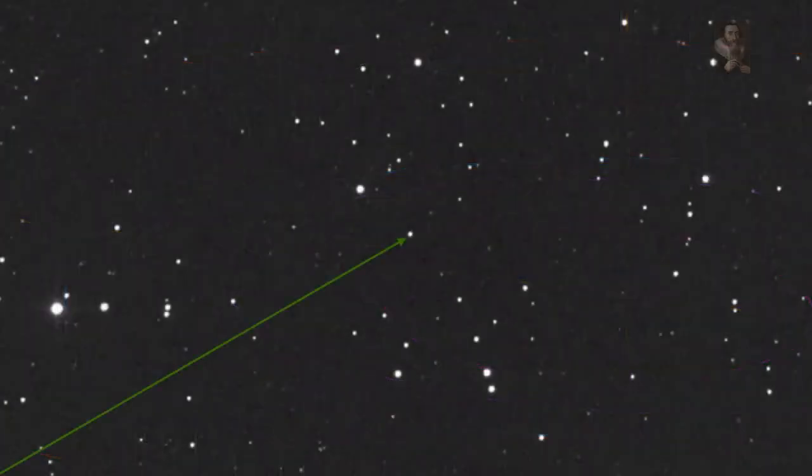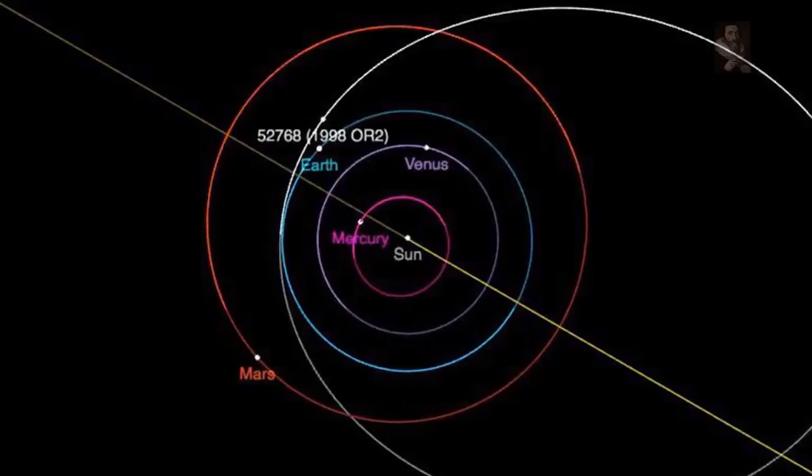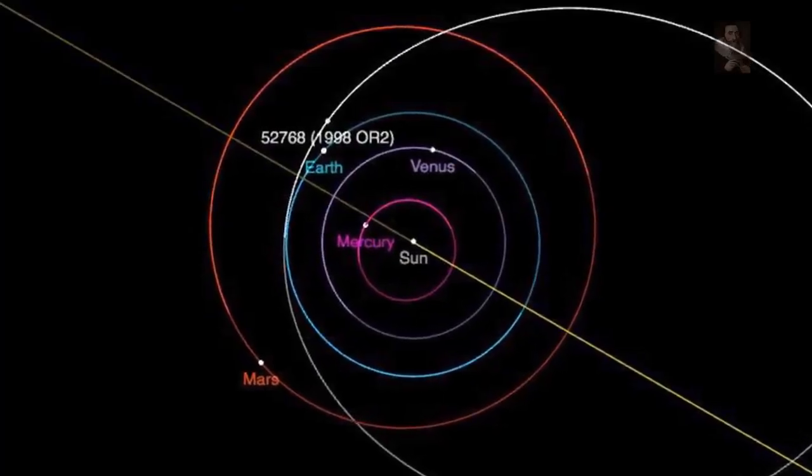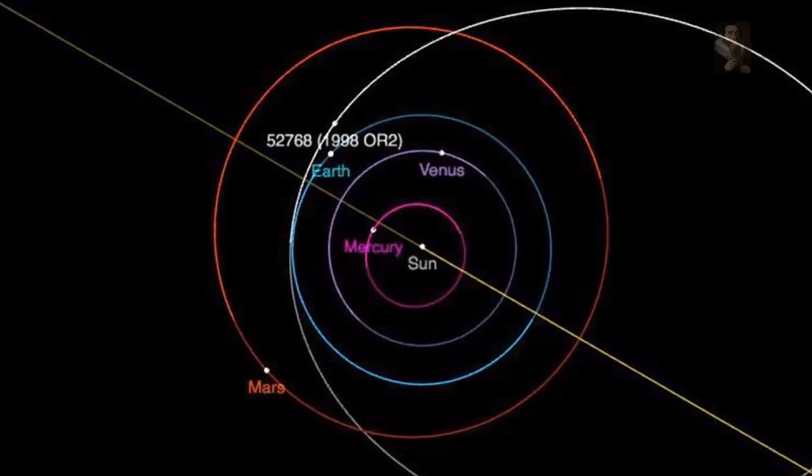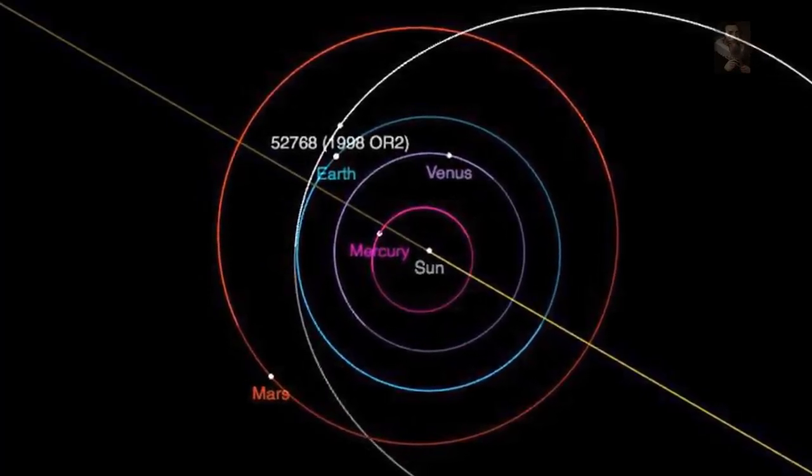It is estimated to be at least a mile wide, but may even be two and a half times as big as these estimates. It is set to pass at 4 million miles away, or 16 times the Earth-Moon distance, and incredibly,